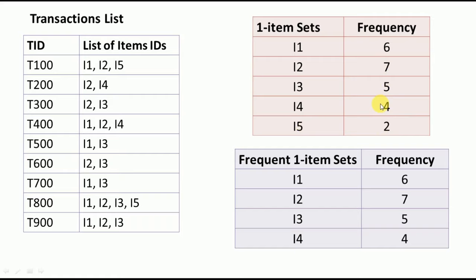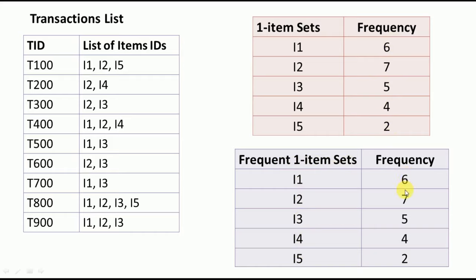As per the problem definition, we need to find all item sets where the minimum support is satisfied. The minimum support is 2. If you look at all the one-item sets, all of them satisfy that requirement because everywhere the frequency is 2 or more. So the frequent one-item sets are I1, I2, I3, I4, and I5 with frequencies 6, 7, 5, 4, and 2 respectively.